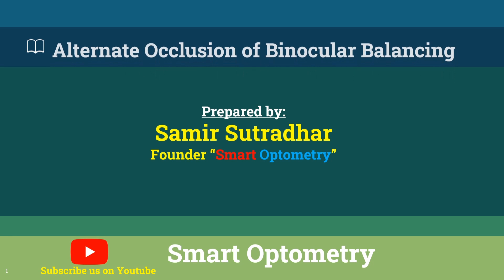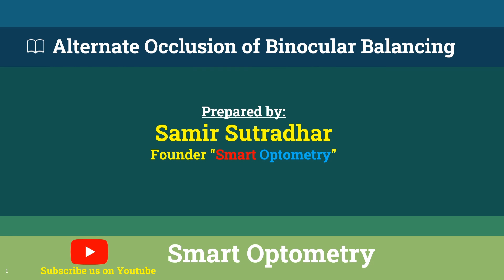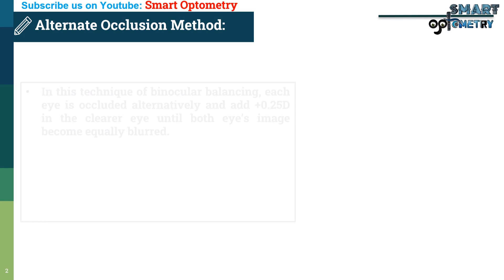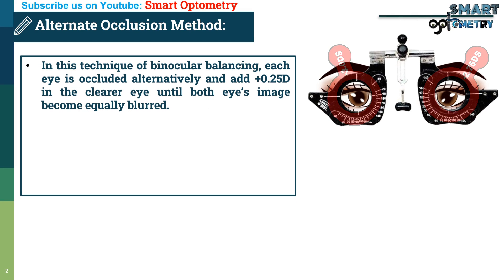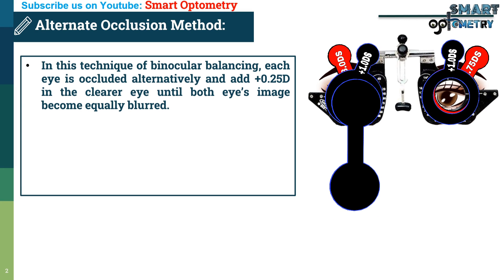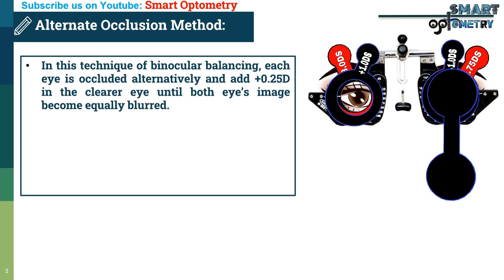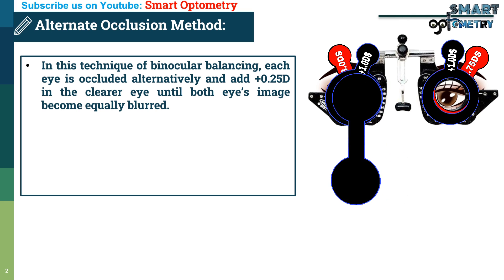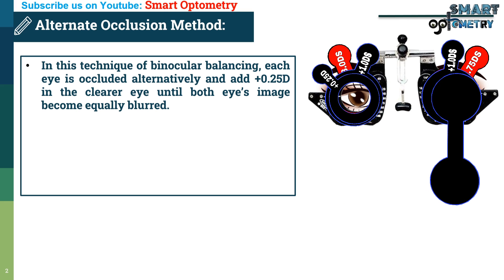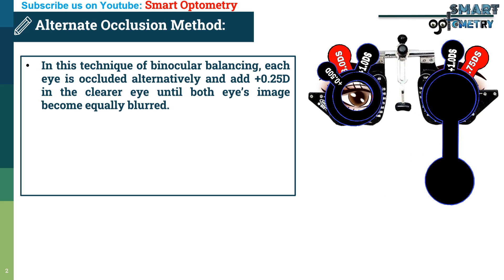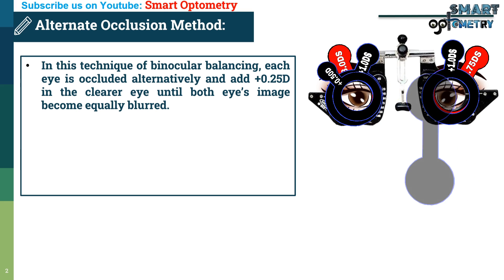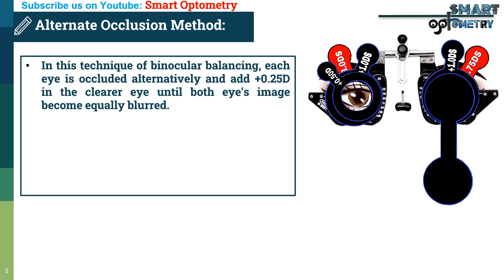Today I will discuss the alternate occlusion method of binocular balancing. In this technique, each eye is occluded alternatively and plus 0.25 dioptre is added to the clearer eye until both eyes' images become equally blurred.